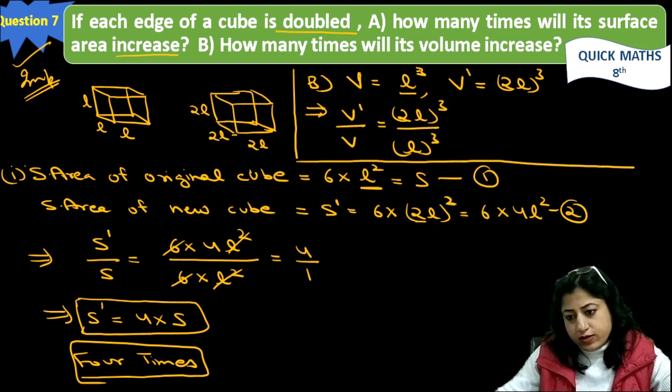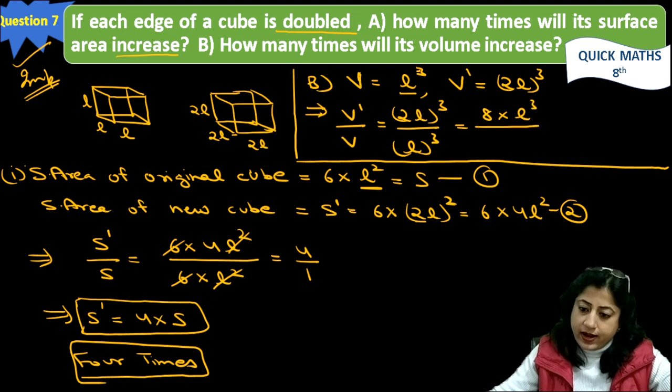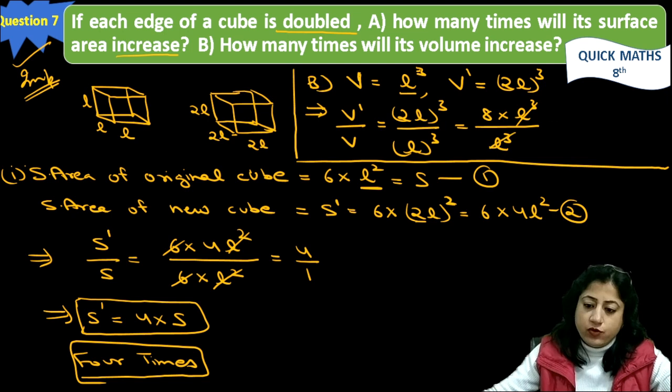Therefore the ratio of new volume upon original volume will be 2L cube upon L cube. Now, 2L cube means 2, the cube of 2, it is 8, 8 into L cube, and in denominator it is just L cube. L cube, L cube will be cancelled out, it will be 8 by 1.